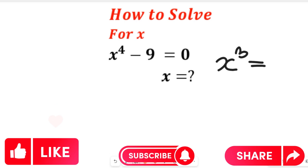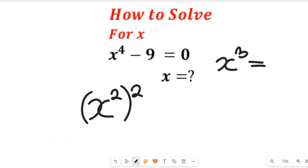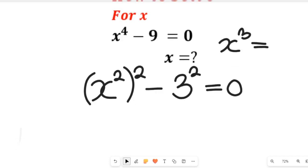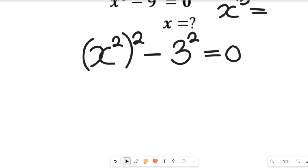This is a solution to a nice exponential expression. To solve this, we are going to rewrite it as x to the power of two, all to the power of two, minus three squared equals zero. From the law of indices, two times two gives us four, so x to the power of four is the same as x to the power of two multiplied by two. Let's simplify this expression from here.